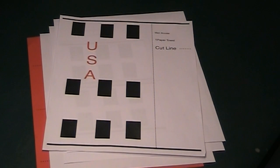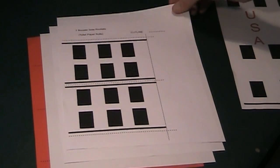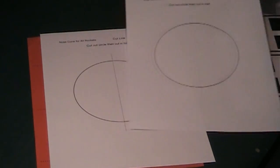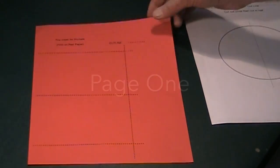The first page is for the paper towel roll. The second page is for both toilet paper rolls. The third and fourth pages are circles for the nose cones. And the final page is for your pretend fire.